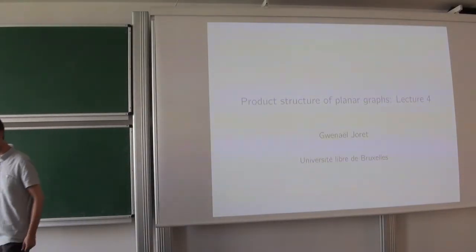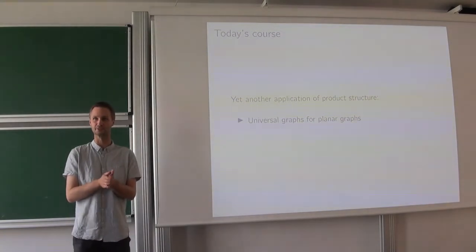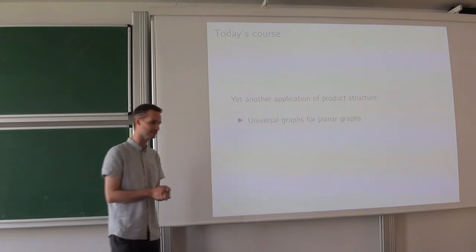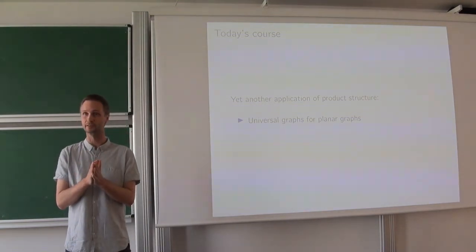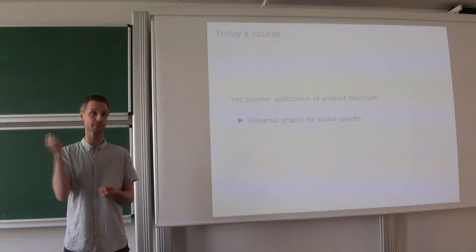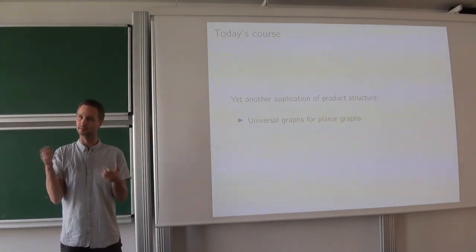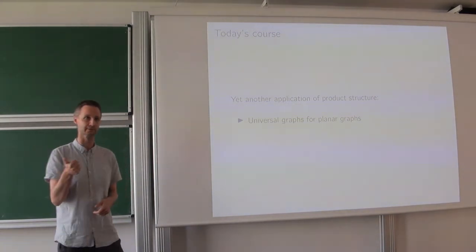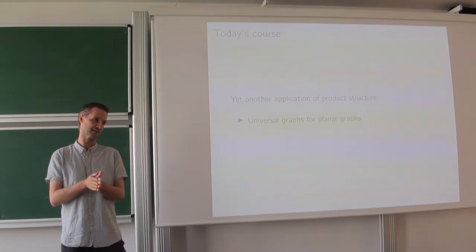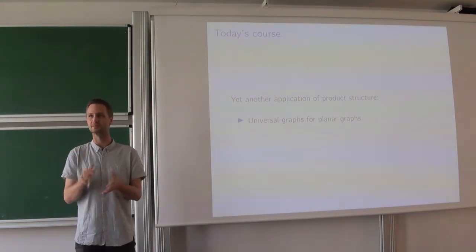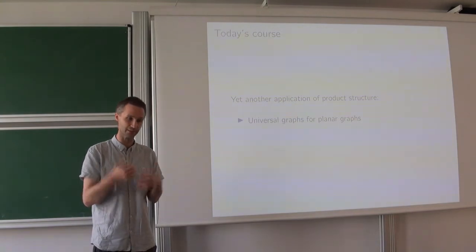So what are we going to do today? We are going to look at a topic that I like very much. It's an application of product structure, but it's a bit different from the types of applications we've been looking at so far. The applications we have been looking at include Q numbers, which is a vertex ordering problem, and then almost all the other applications involve types of coloring problems: non-repetitive colorings, P-centered colorings, vertex L rankings. There was also the fractional tree defragility business, which is not exactly a coloring problem, but it's quite close. Today I want to show you an application which is a bit different from that.